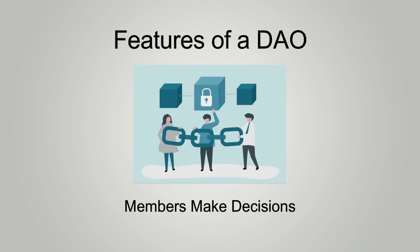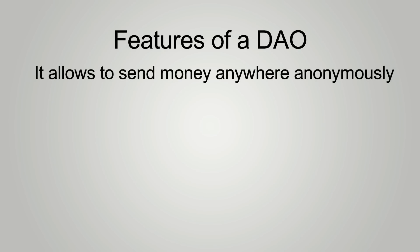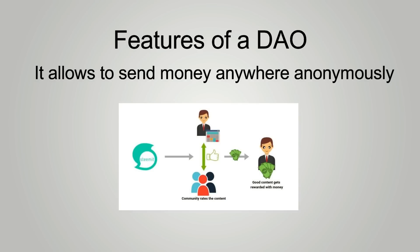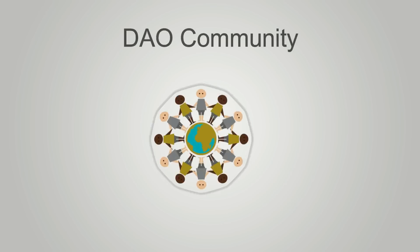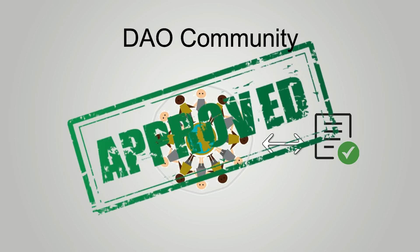Members make decisions regarding things such as technical upgrades and how funds are spent. DAOs exist to allow investors to send money to anyone from anywhere in the world, anonymously, and allow people to perform transactions in a secure environment. A DAO's community member drafts proposals about the future of the project and votes on those proposals. If the members agree on the proposals, they are adopted and enforced by the rules embedded in the DAO's program.